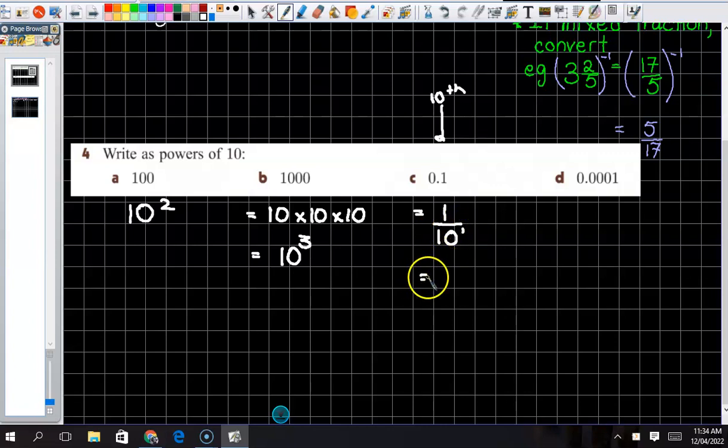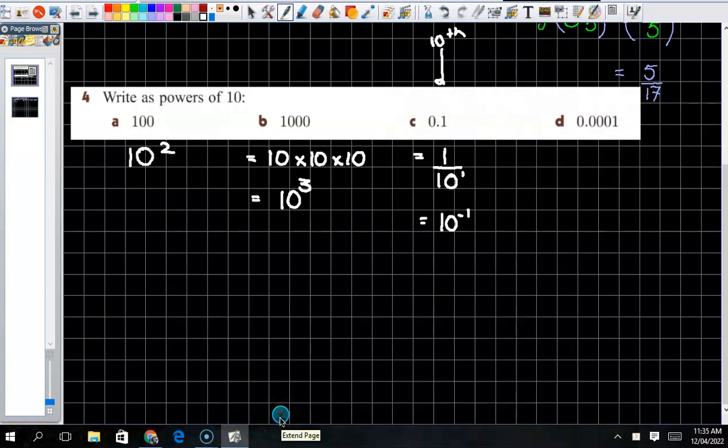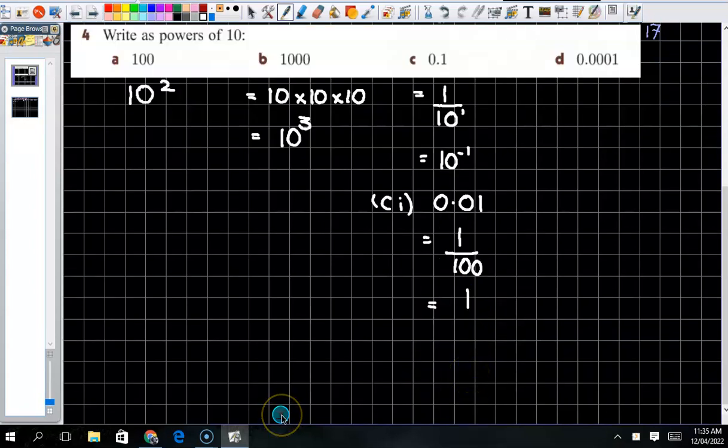So technically 10 to the 1, and if I move it upstairs the power becomes negative. If I added 0.01, that's 1 over 100, and what do we know 100 is? 10 squared. And if I then have to move that up, the power becomes negative. That's what we're talking about with our negative power: if it's downstairs and you move it up it becomes negative, if it's upstairs with a negative, to get rid of the negative slap it downstairs.